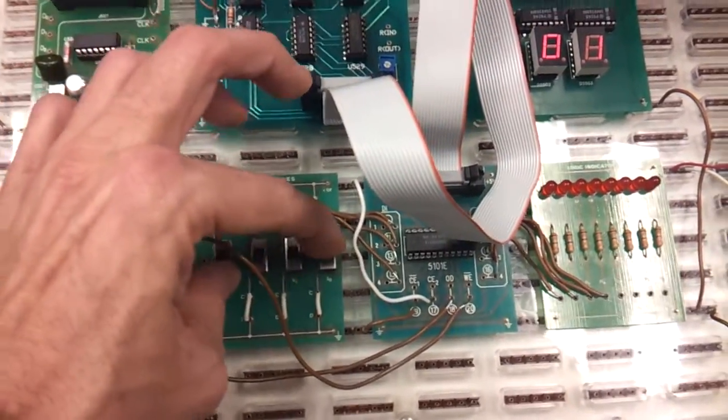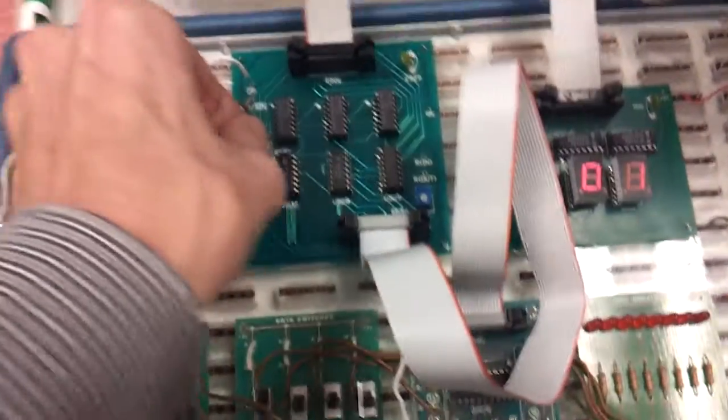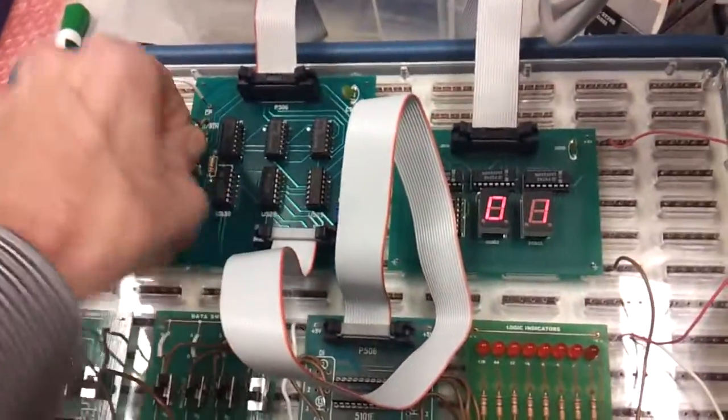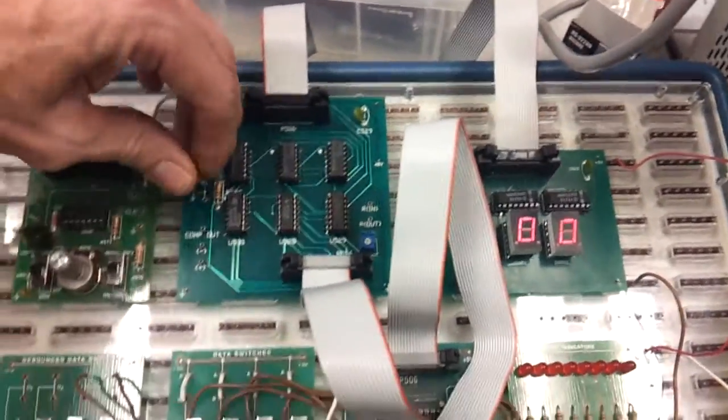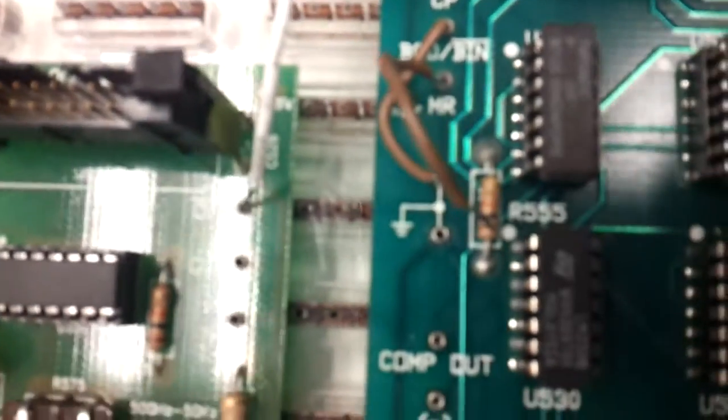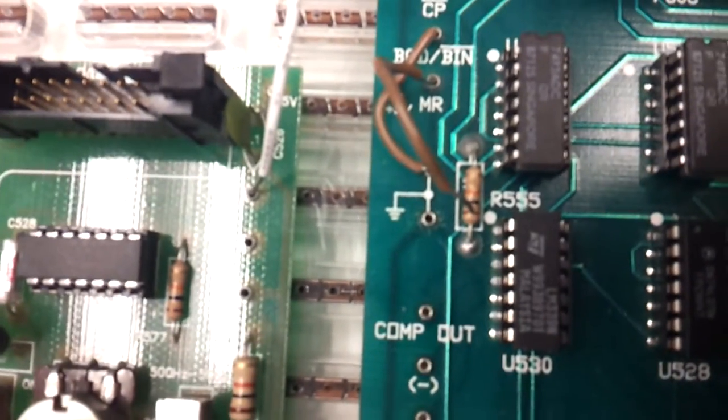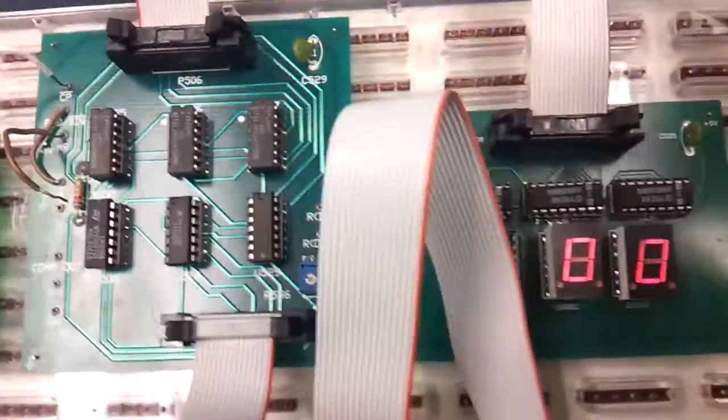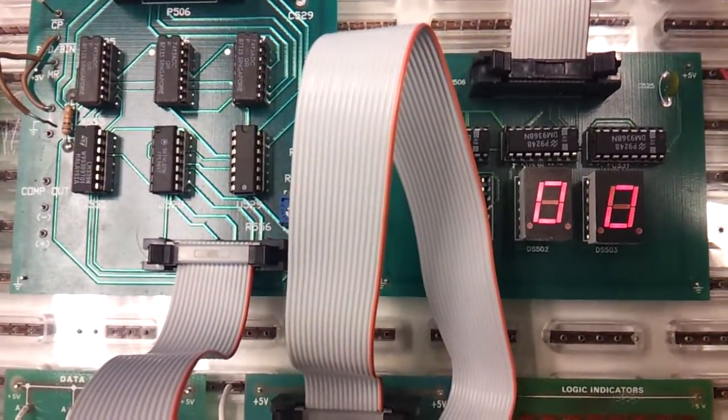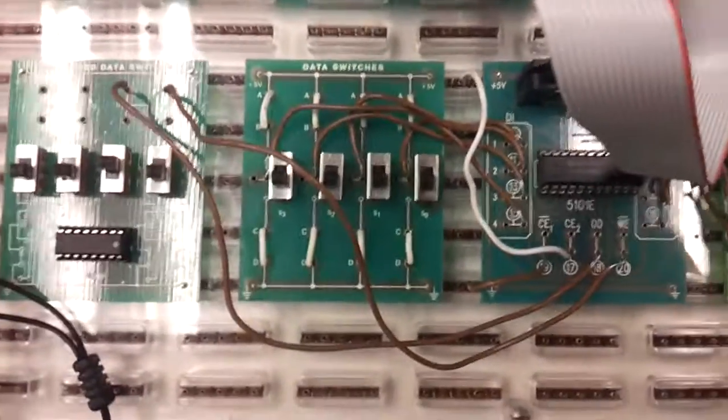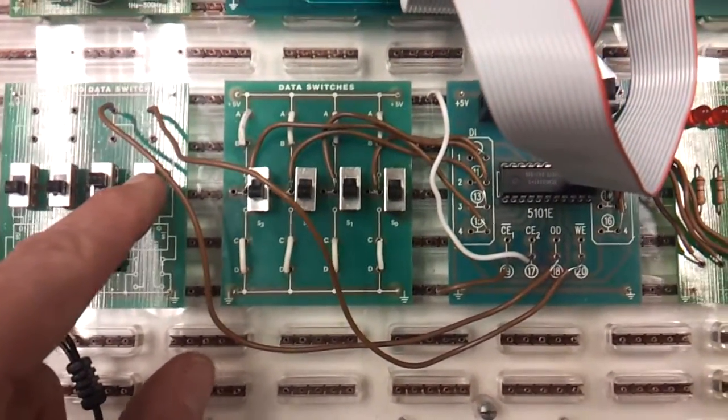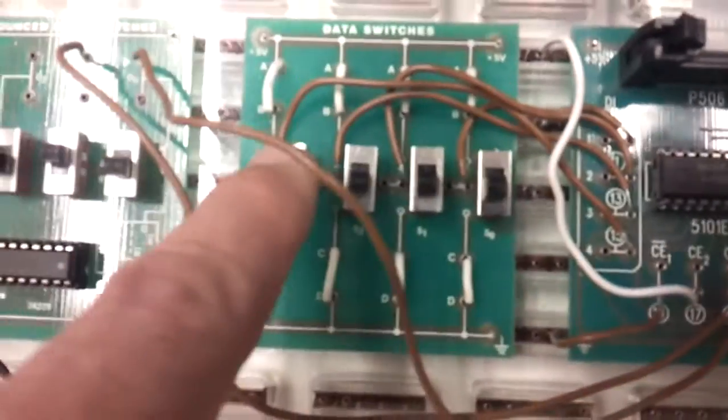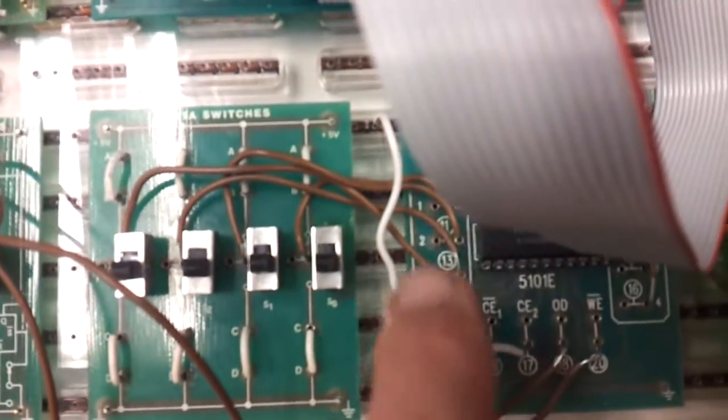I'm going to set all data switches low. I'm going to pull the reset on the counter to get to address zero. Reset's active high, so I just removed the MR pin. Master reset is no longer grounded, so I go to address zero zero. At that address, I've got the RAM chip enabled to write. WE is low and I'm writing all zeros to the data input.